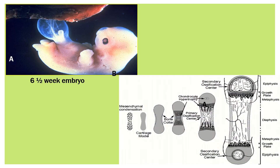The musculoskeletal system arises from the middle layer of the embryo, primarily the lateral plate mesoderm, from which develops the peripheral skeleton. The limb buds, proximal and distal, are seen in this six-and-a-half week specimen. These contain the anlage of the peripheral skeleton. In a limb bud, the sequence of formation of a long bone is shown in this sketch.